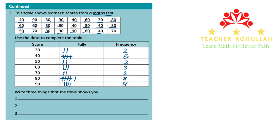This is how we record the data given in the table. This is the usefulness of the tally chart and frequency table — you can use the tally chart to mark each one of these scores one by one. Now it says: write three things that the table shows you. One thing we can say is how many students are in the class, by adding the total: 2 plus 5 is 7, plus 2 is 9, plus 3 is 12, plus 2 is 14, plus 8 is 22.